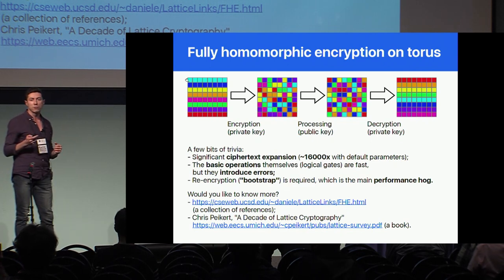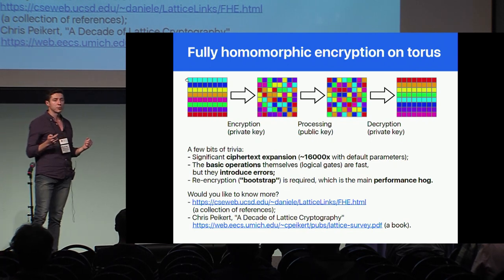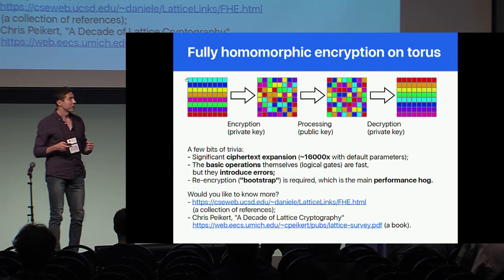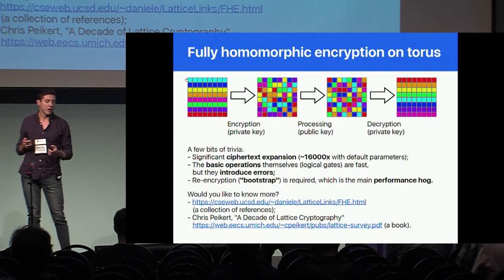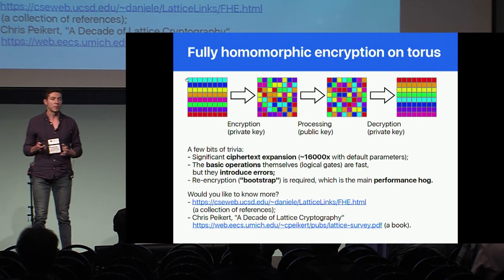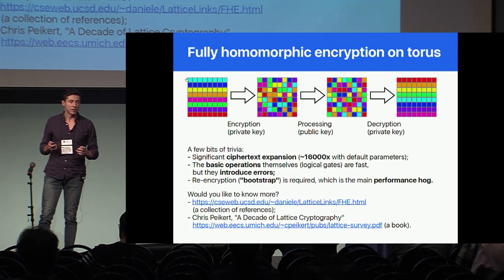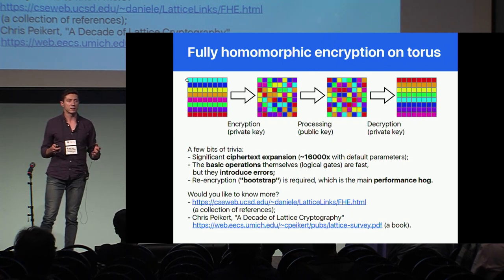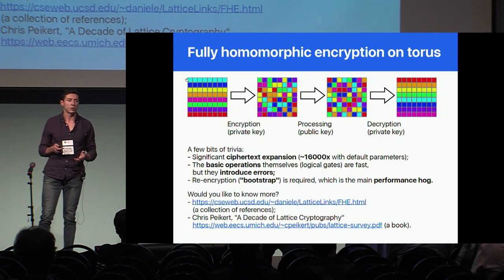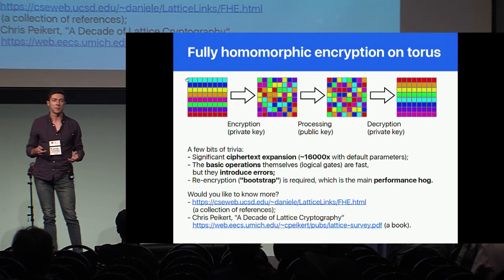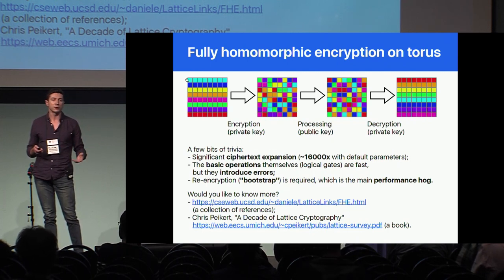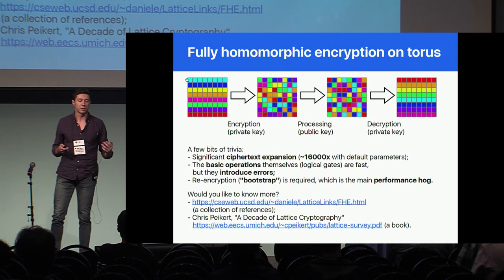A few points about the algorithm we use in this library: first, there is a very large ciphertext expansion — 16,000 times, or 2 kilobytes per bit of plaintext. Second, the operations on ciphertexts — all the binary gates on bits — are very fast. But what takes time is bootstrapping, because all the operations introduce errors, and after each operation we need to get rid of them. That's what takes the majority of time.